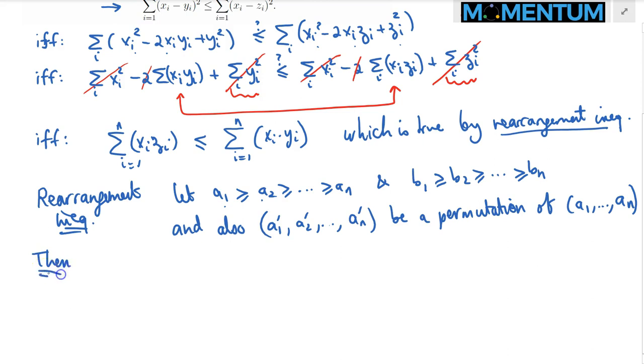Then, thanks to the rearrangement inequality, we have the following amazing results. We have that a 1, the greatest sum product happens to be this one, a 2 times b 2, all the way up to a n, b n.